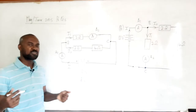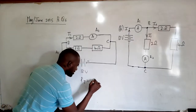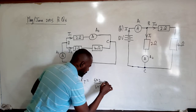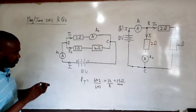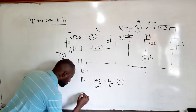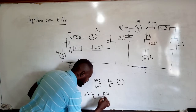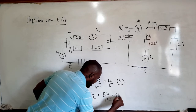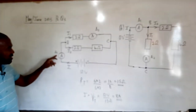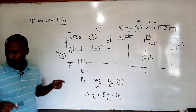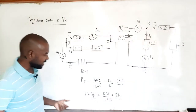The total circuit resistance is 1.5 ohms. Using Ohm's law, i = V / RT = 12 volts / 1.5 ohms = 8 amperes. So the total current flowing is 8 amperes, and therefore the reading on ammeter A1 equals 8 amperes, since A1 measures the total current flowing in the circuit.